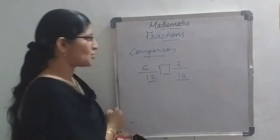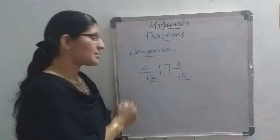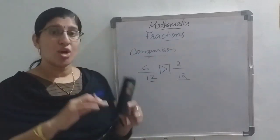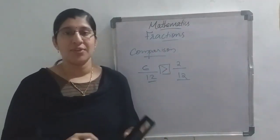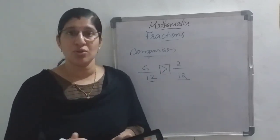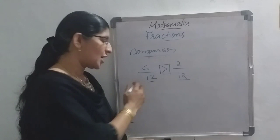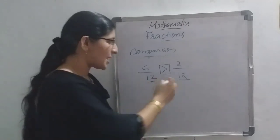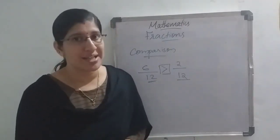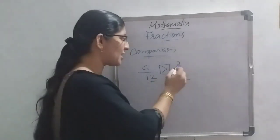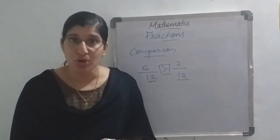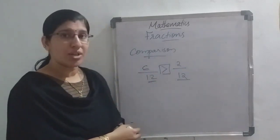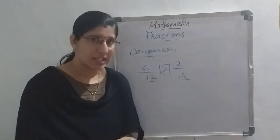Here the numerator is 6 and here the numerator is 2. Which is the greater numerator? 6 is the greater numerator, so 6 by 12 is the greater fraction. For example, if there are 12 chocolates and 6 chocolates are given to my brother and 2 chocolates to my sister, who got more? My brother got more because 6 is greater than 2.